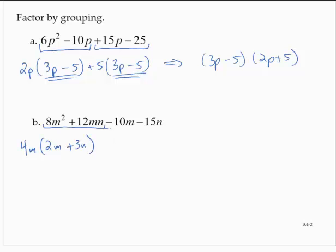The second two terms, minus 10m minus 15n, they share a factor of 5. But since, in general, when that third term is a negative, you want to factor out a negative. So I'm going to factor out a negative 5 here.